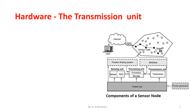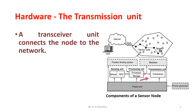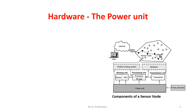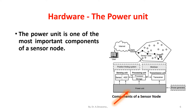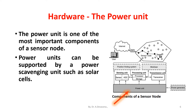The transmission unit connects the node to the network. The power unit is one of the most important components of a sensor node. Power units can be supported by a power scavenging unit, such as solar cells. The other subunits of the node are application-dependent.